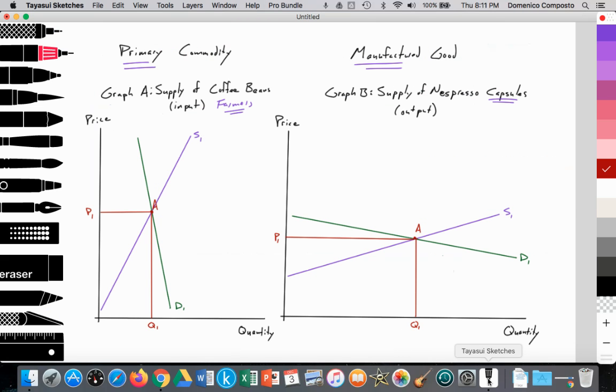So what would this look like? Here we have, in Graph A, the supply of coffee beans. This is coming from those 25 million farmers, and perhaps we're looking at an individual farmer here and how they're responding to a change in price. This can also represent the global market for coffee.